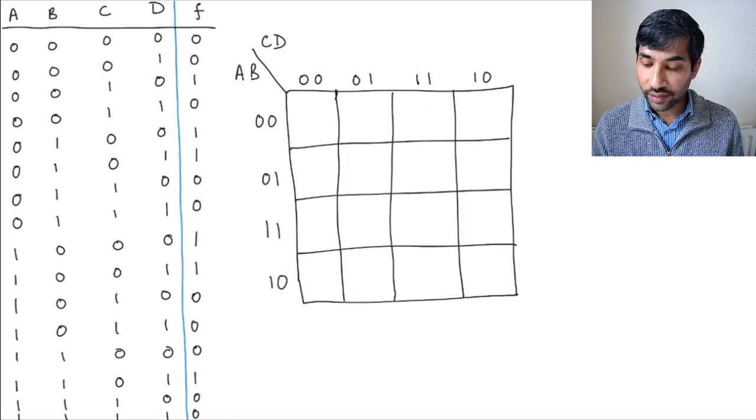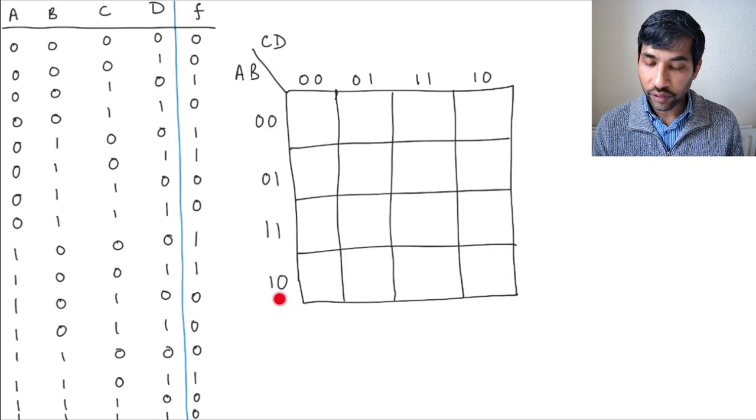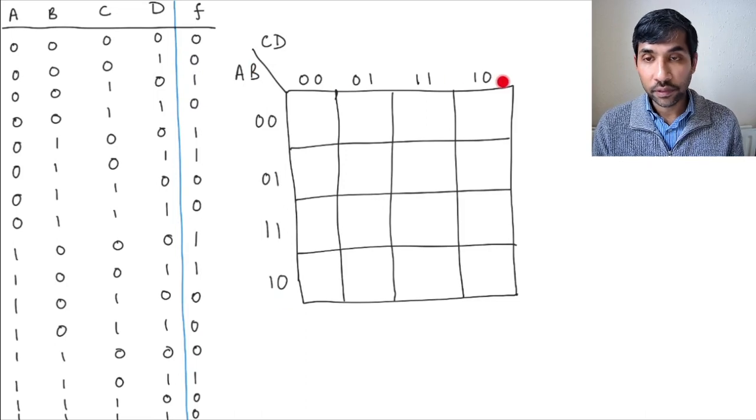As we already said, to do that, we have to draw a K-map with 16 squares, and we put two of the inputs on the vertical side and two of the inputs on the horizontal side.